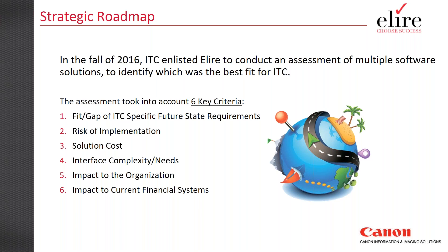Two of those criteria stand out. First is a fit gap against their specific requirements — how does their blue-sky future-state solution need to work? We evaluated three different solutions and rated how well each fit, whether it required customization or tailoring. Second, and most important to this organization, was the impact to current financial systems. Alir calls this a PUN score — we rate solutions based on how much they'll impact your ERP, how much customization is required, and how difficult it will be to maintain through future PUM updates.